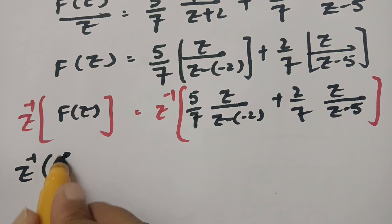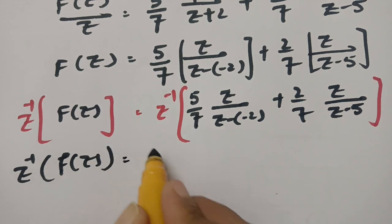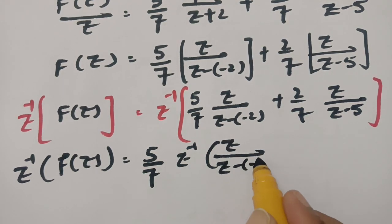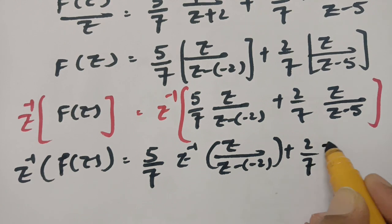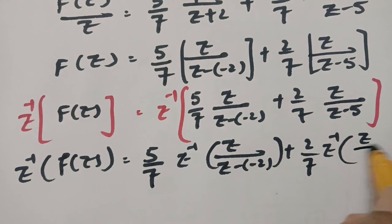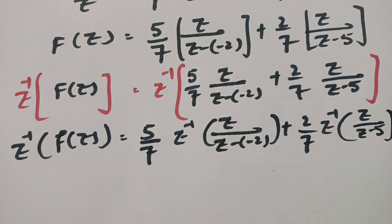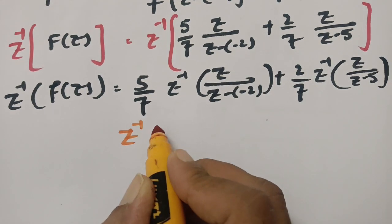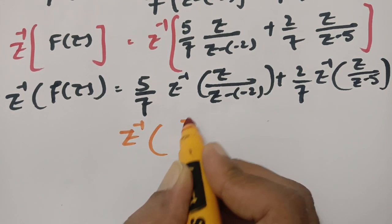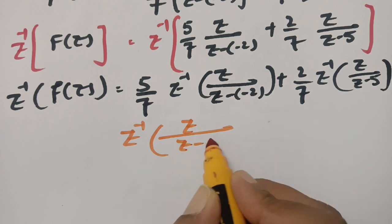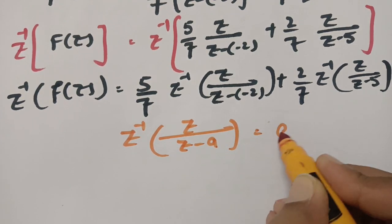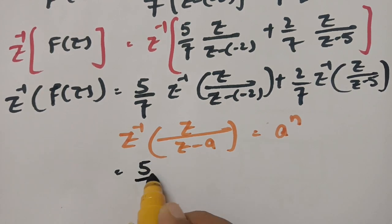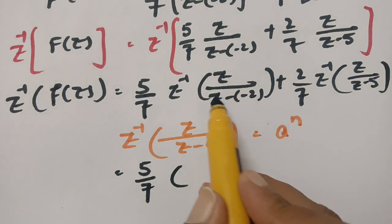Therefore, Z inverse of F of Z equals 5 by 7 times Z inverse of Z by Z minus of minus 2 plus 2 by 7 times Z inverse of Z by Z minus 5. According to our special functions of Z transform, Z by Z minus A equals A power N.